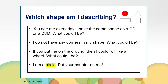The answer is a circle. Put your counter on the circle. The circle is shaped like a DVD and has no corners. If you put it on the ground, it could roll like a wheel.